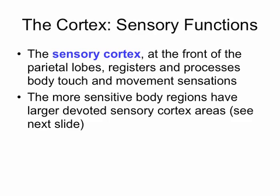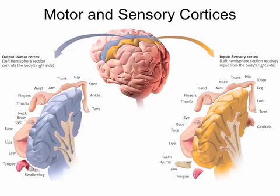The sensory cortex is at the front of the parietal lobes, and that's where information from your senses is going to be registered concerning touch. The more sensitive your body region is, there's obviously more cortical area devoted to it. These funky-looking pictures here give you a nice graphic of that.